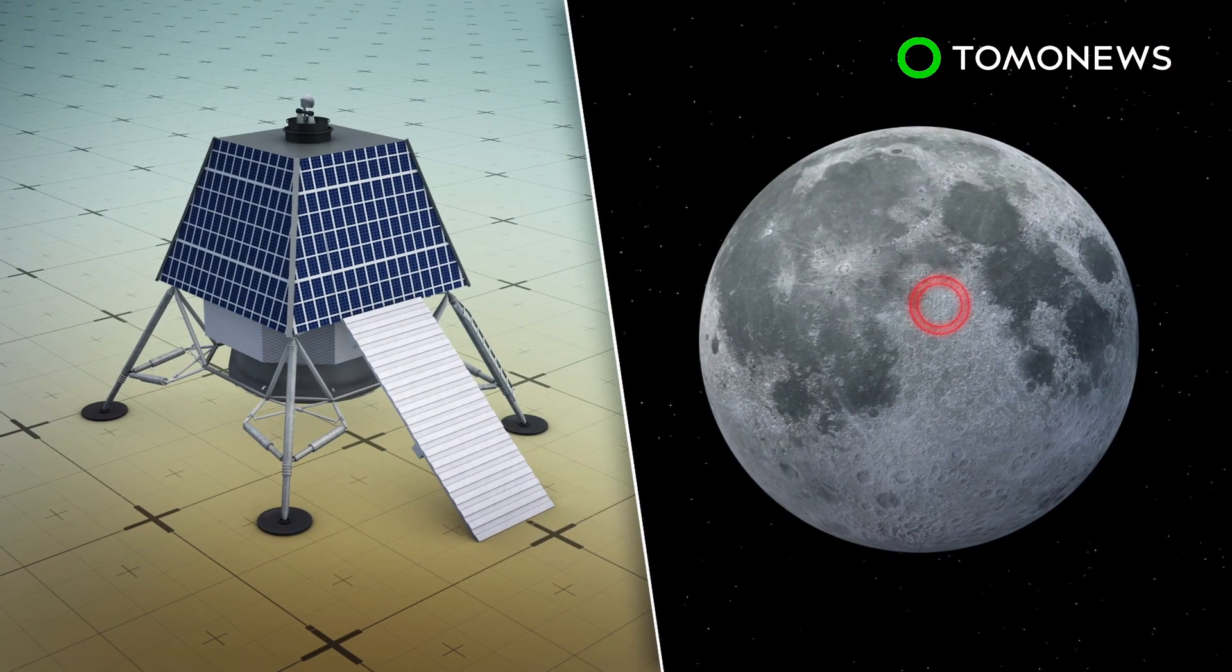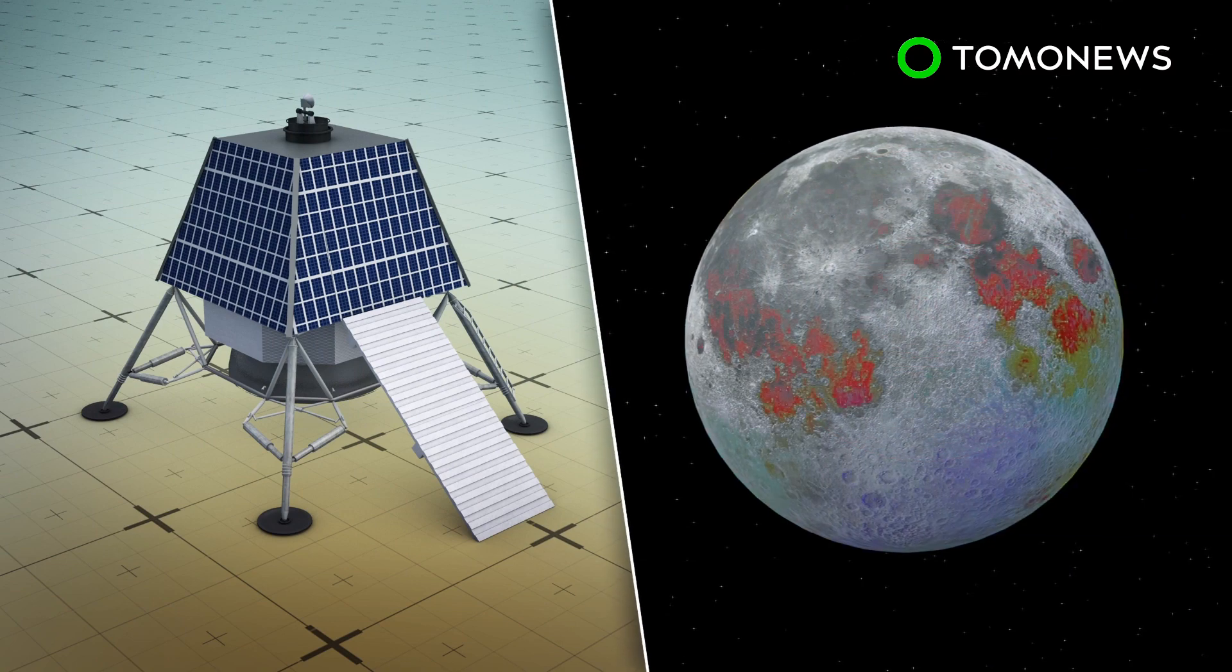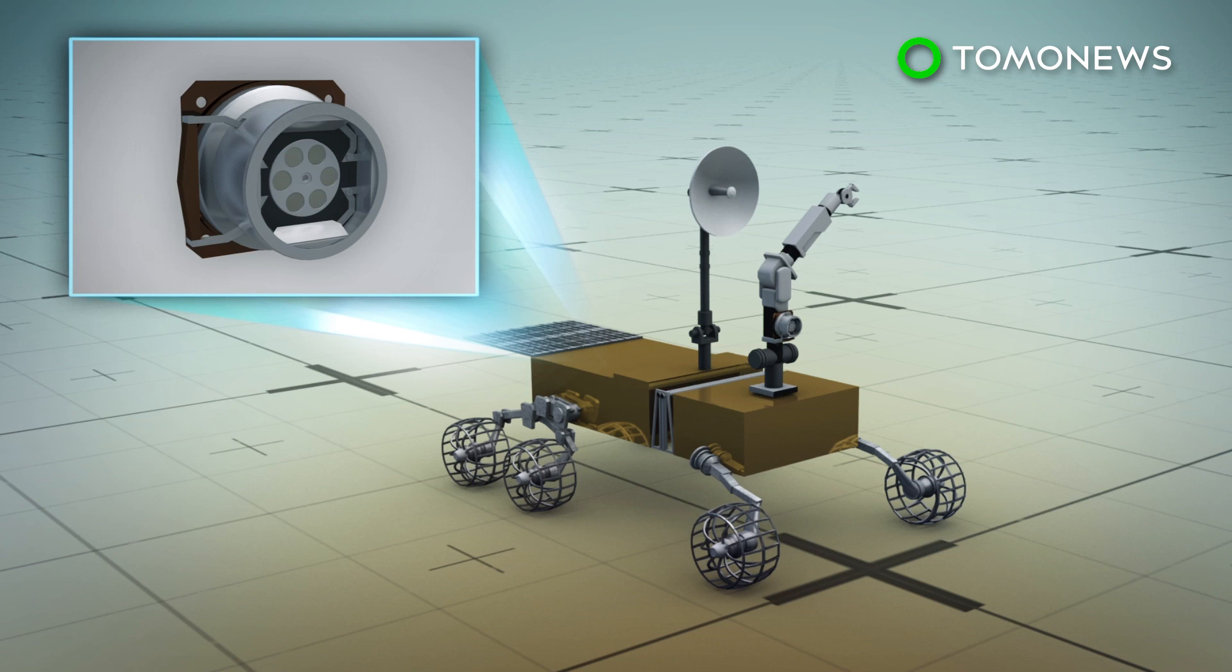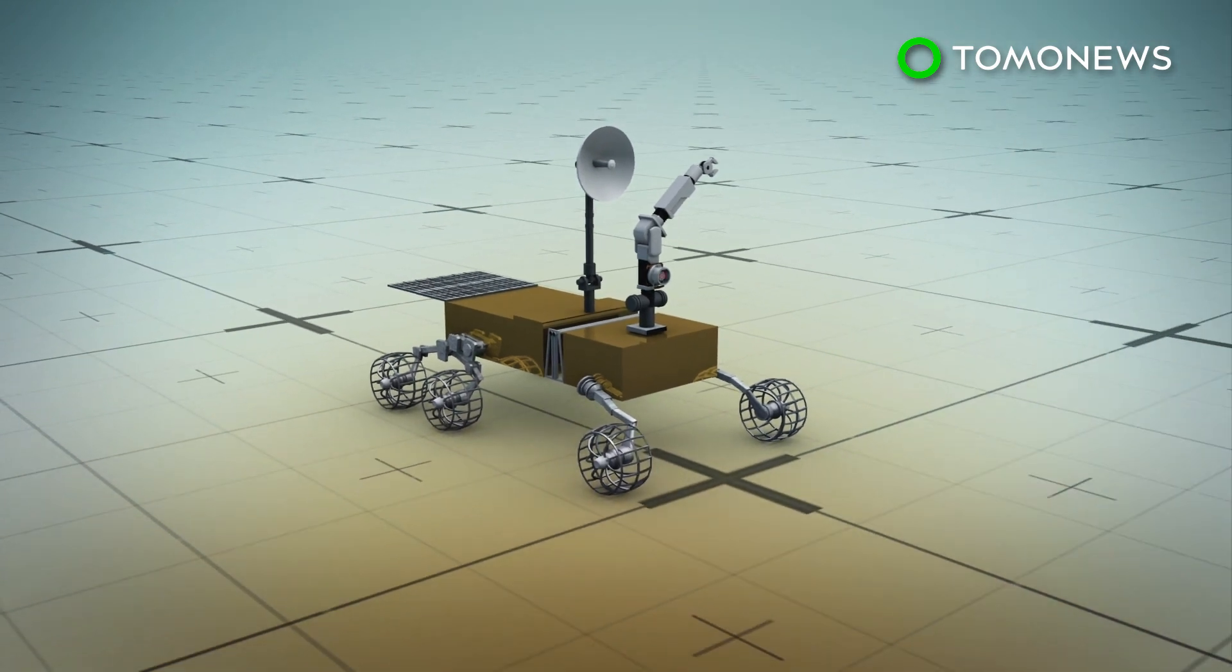The lander will include an instrument for lunar seismic activity and a thermal probe, while the rover will carry an x-ray spectrometer and a laser-induced breakdown spectroscope.